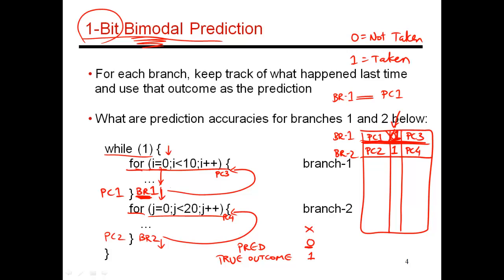So now when I come through the loop again with the next iteration, the predictor says that I think you're going to be taken, because that's what you did last time. And this time, it is going to be correct, because you are going to jump back up. So this prediction is correct. And then this happens seven more times, where the predictions are all correctly taken. And then finally,